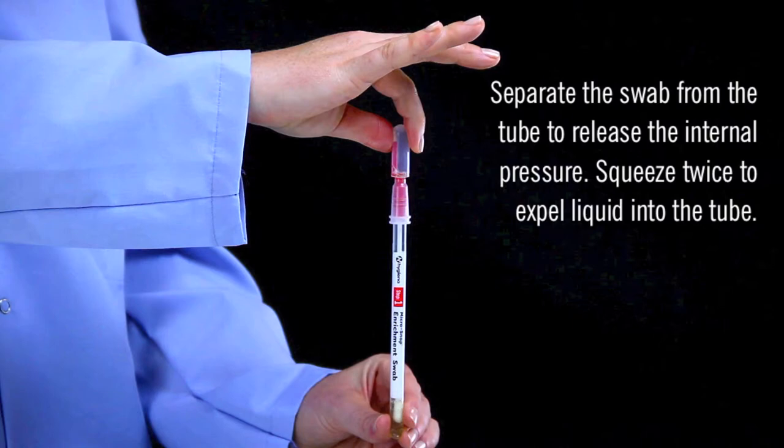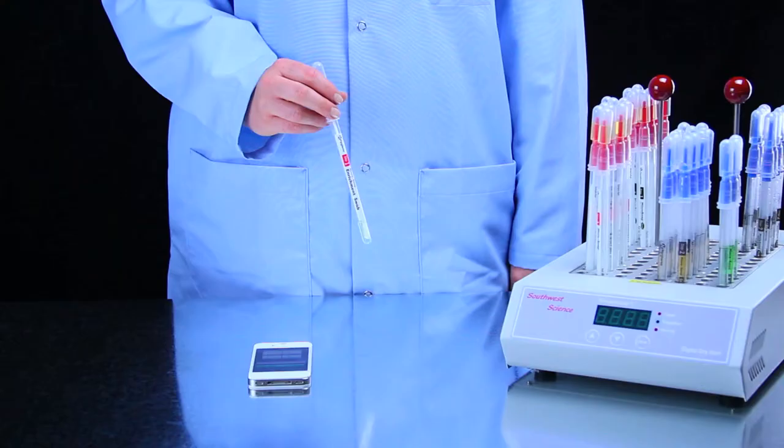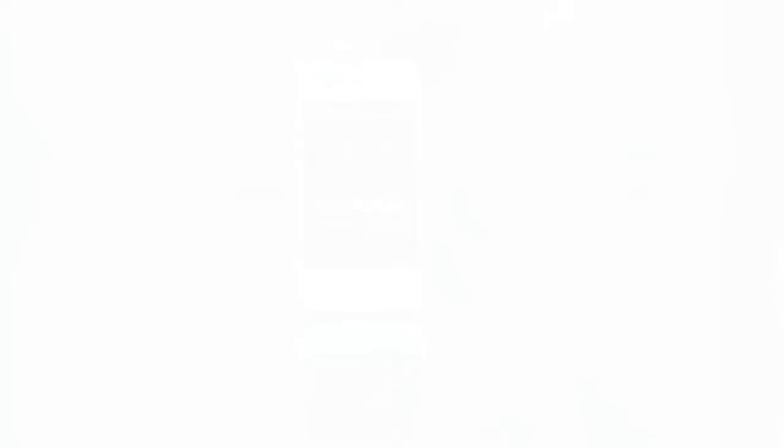Replace the swab in the tube and shake for 5 seconds. Incubate the enrichment device at 37 degrees Celsius. For enumeration or quantitative measurement, set the timer for 6 hours. For presence-absence testing or qualitative measurement, set the timer for 8 hours.